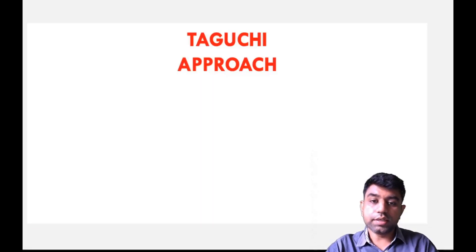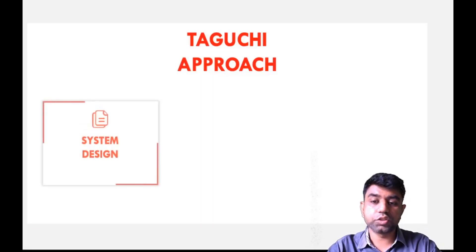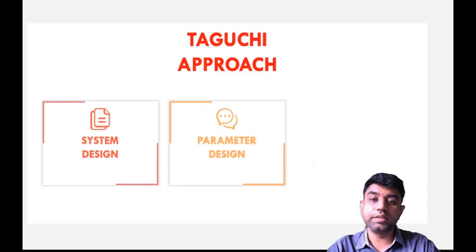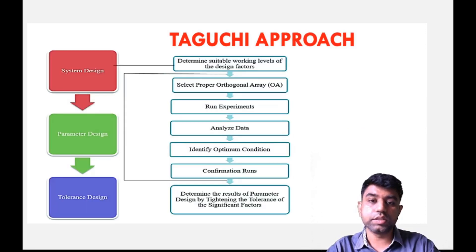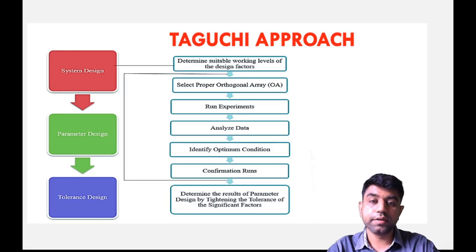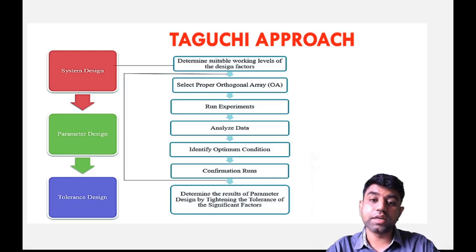Now let us understand the Taguchi approach. Taguchi says that any experiment depends on three things: you need to design a system — called system design; then design the parameters — called parameter design; and then tighten the tolerance — called tolerance design. System design is nothing but determining the suitable working levels of the design factors, meaning which are the proper input variables. For the tire failure example, we determined the working levels to evaluate: speed, temperature, and pressure of the tire.